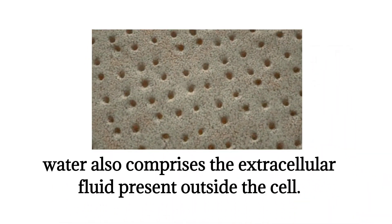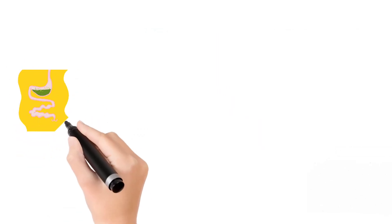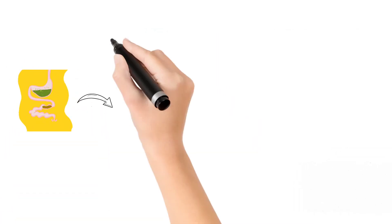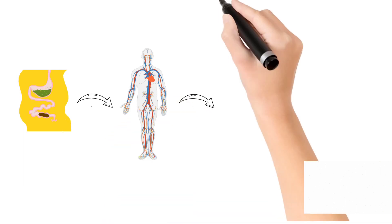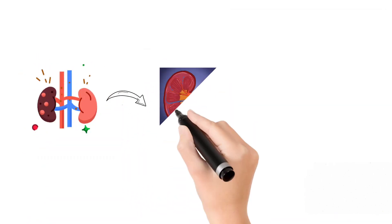After digestion and absorption, the water goes into our circulatory system, from where it is transferred to each and every cell of our body, and then to the kidneys where extra water is removed from our body in the form of urine.